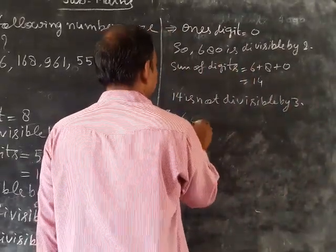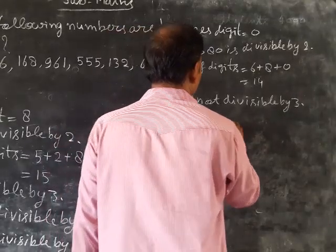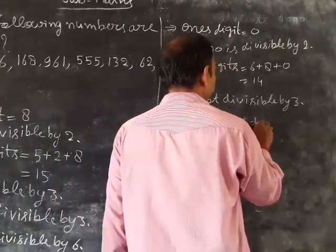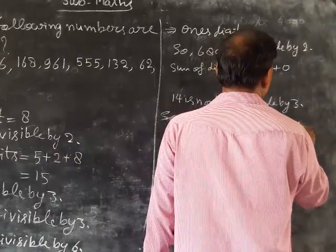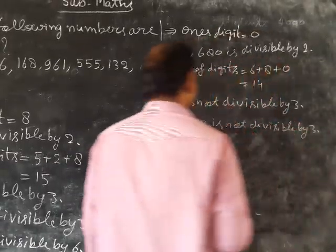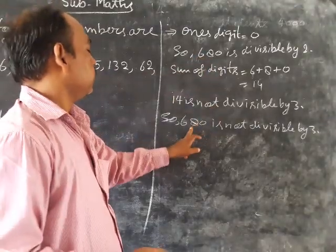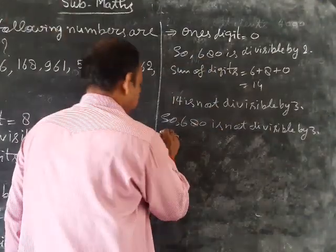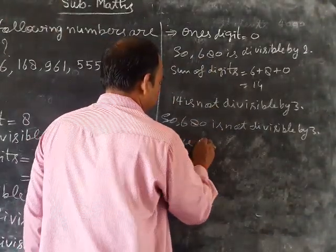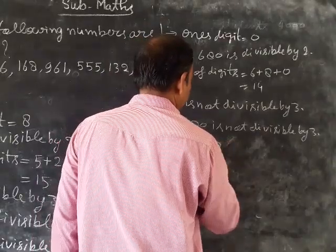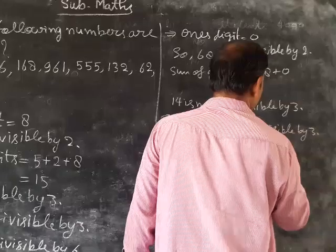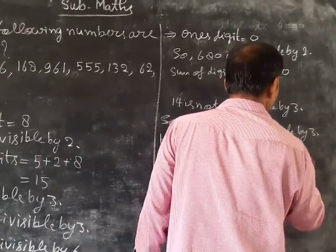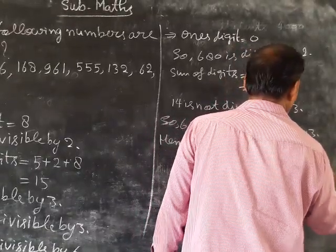So 680 is not divisible by 3, which means 680 is not divisible by 6.